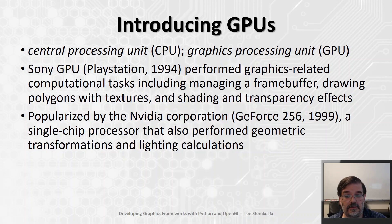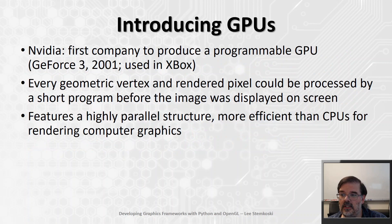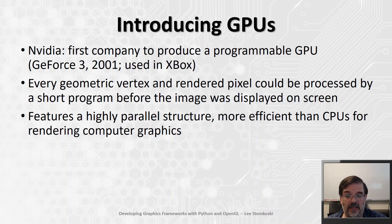NVIDIA was also the first company to produce a GPU capable of being programmed by developers — every geometric vertex and every rendered pixel could be computed upon. Their next processor, the GeForce 3, was introduced in 2001 and was also used in the Xbox video game console. In general, GPUs use a highly parallel structure — which we'll discuss later when we cover the graphics pipeline — enabling them to be much more efficient than CPUs for rendering computer graphics. As computer technology advances, so does the quality of graphics that can be rendered, and modern systems can produce real-time photorealistic graphics at high resolutions.